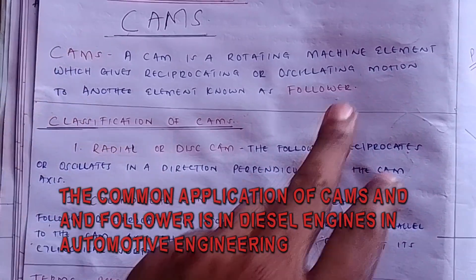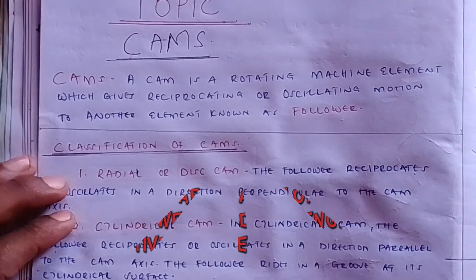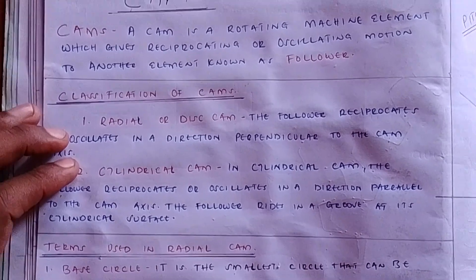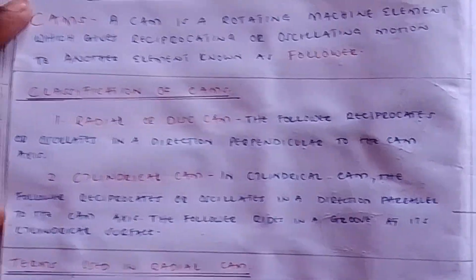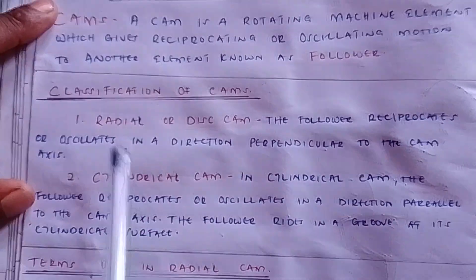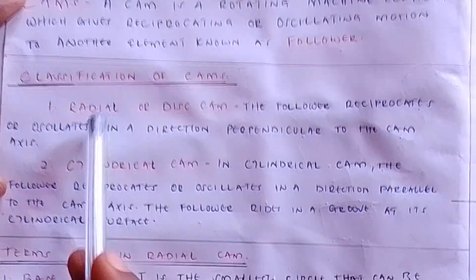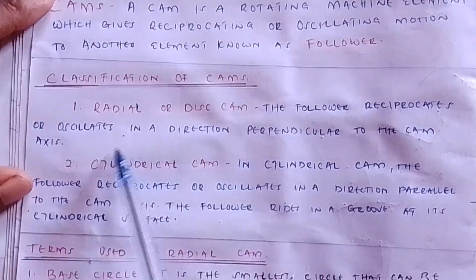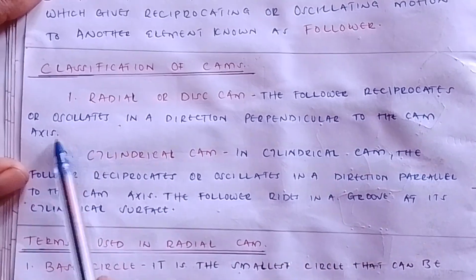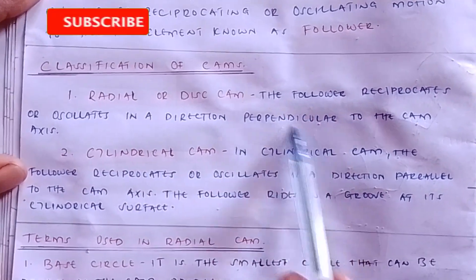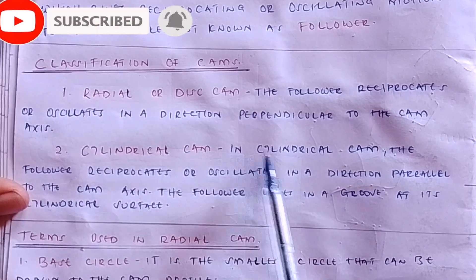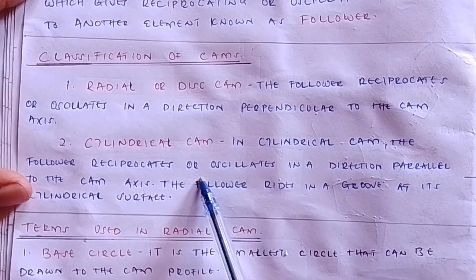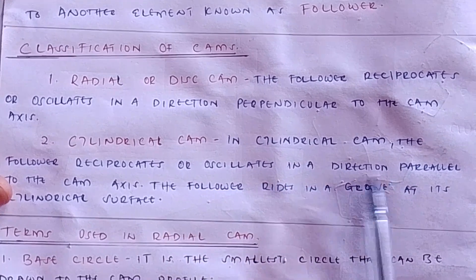A cam must have a follower. We have the classification of cams. The radial or disc cam: the follower reciprocates or oscillates in a direction perpendicular to the axis. When using the radial or disc cam, the follower will reciprocate on the cam in a direction that is perpendicular to the cam axis. Then we have the cylindrical cam, in which the follower reciprocates or oscillates in a direction parallel to the axis.